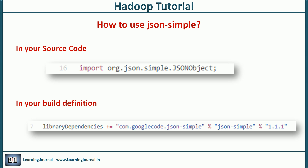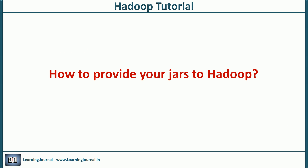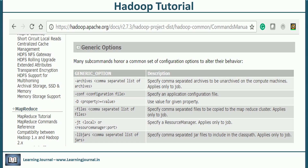We are able to compile the code because we added the dependency in the SBT build file, so SBT will download it from Maven Central and compile our code. But the MapReduce framework doesn't have it in the Hadoop class path. There are many ways to provide your custom jar files to the MapReduce framework, but the most convenient and recommended method is to use Tool Runner. The Tool Runner allows you to pass some additional command line options to your MapReduce programs. These other options are called generic options. Here is a list of all available generic options. We will be using -libjars to provide our simple JSON package.